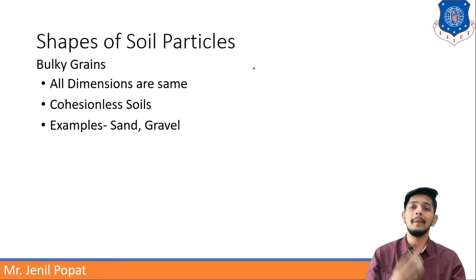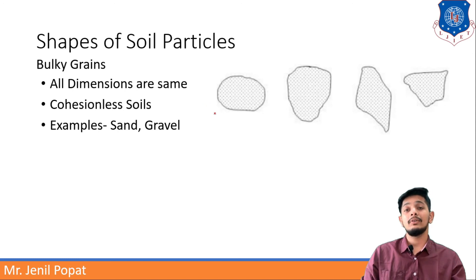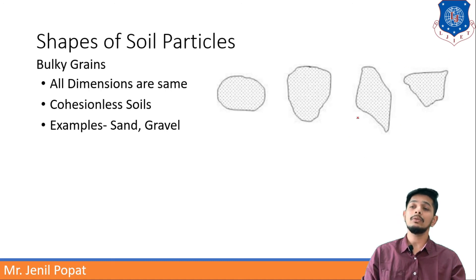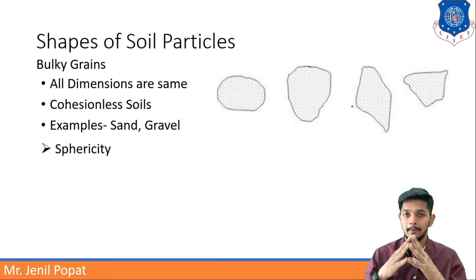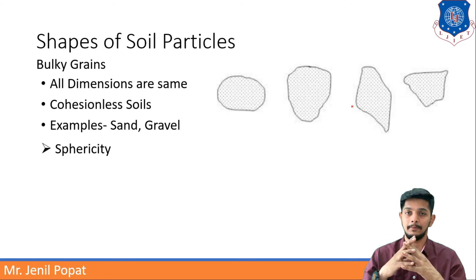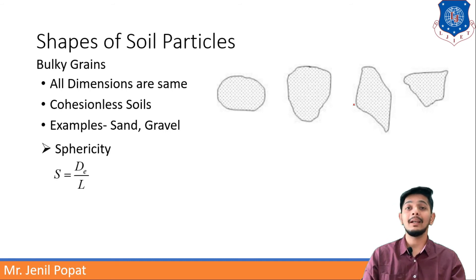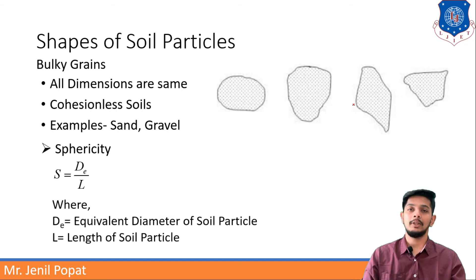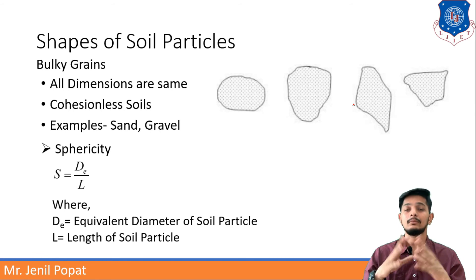Here you can see different shapes of bulky grains: round shape, rectangular shape, angular shape, or flaky shape. Even bulky grains have different, different shapes. Sphericity is a property derived from bulky grains. Sphericity is written as capital S. The formula is S = DE / L, where DE is the equivalent diameter of the soil particle — approximately equivalent in all directions — and L is the length of the soil particle. Diameter divided by length gives you sphericity.